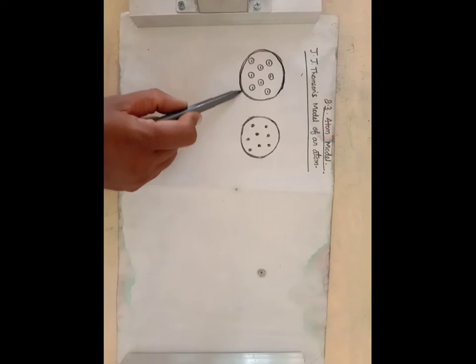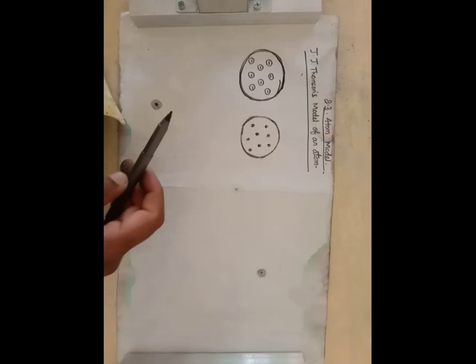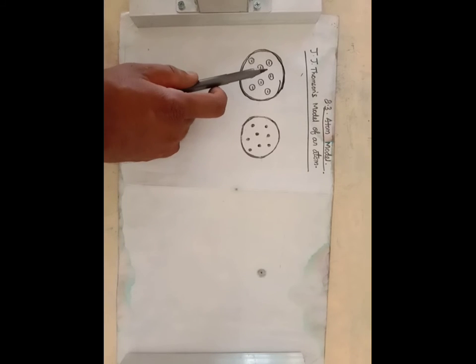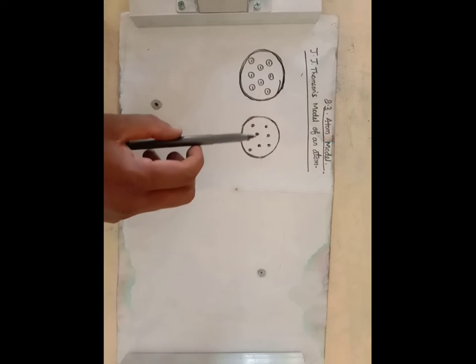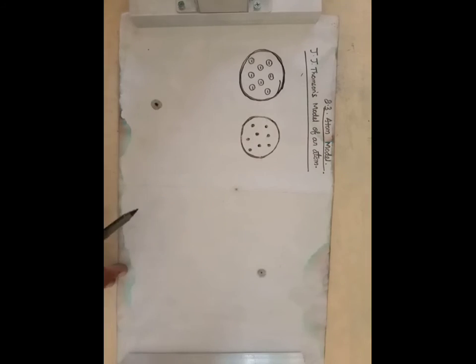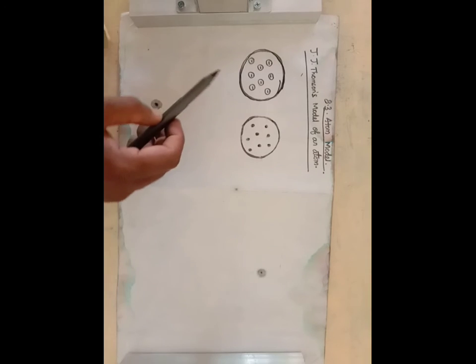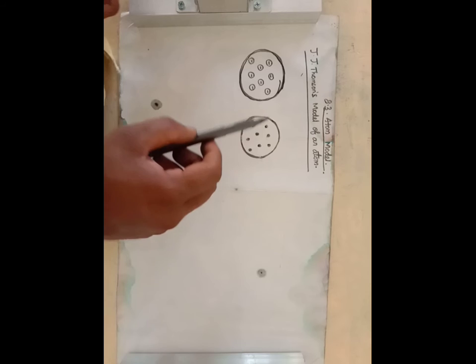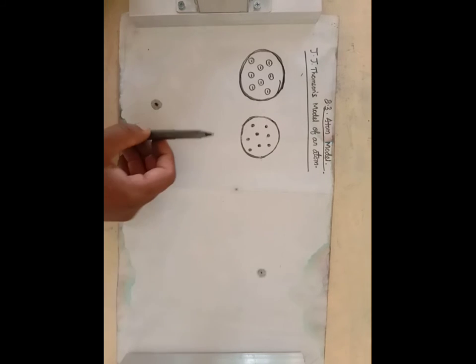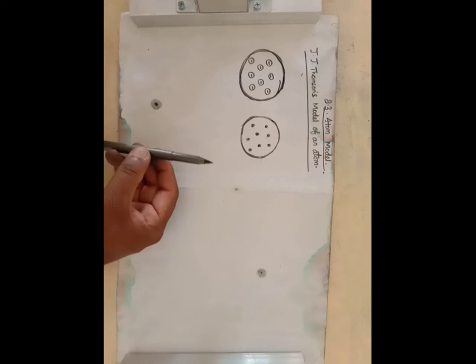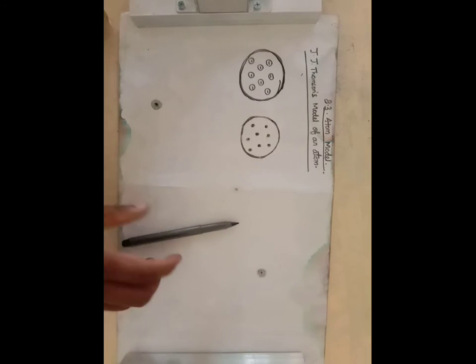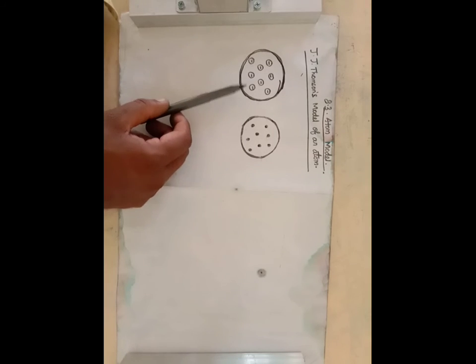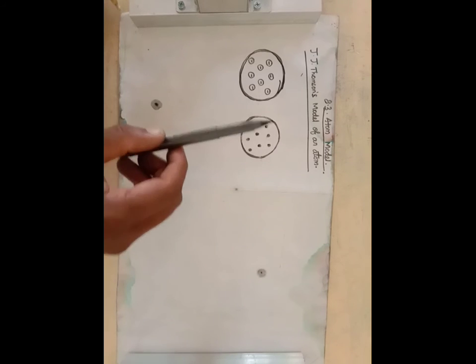The atom is consistent of positively charged particles and negatively charged particles. These negatively charged particles are embedded on it, like seeds in watermelon. The atoms are electrically neutral. This implies that the total number of positive charge in atom is equal to total number of negative charge.